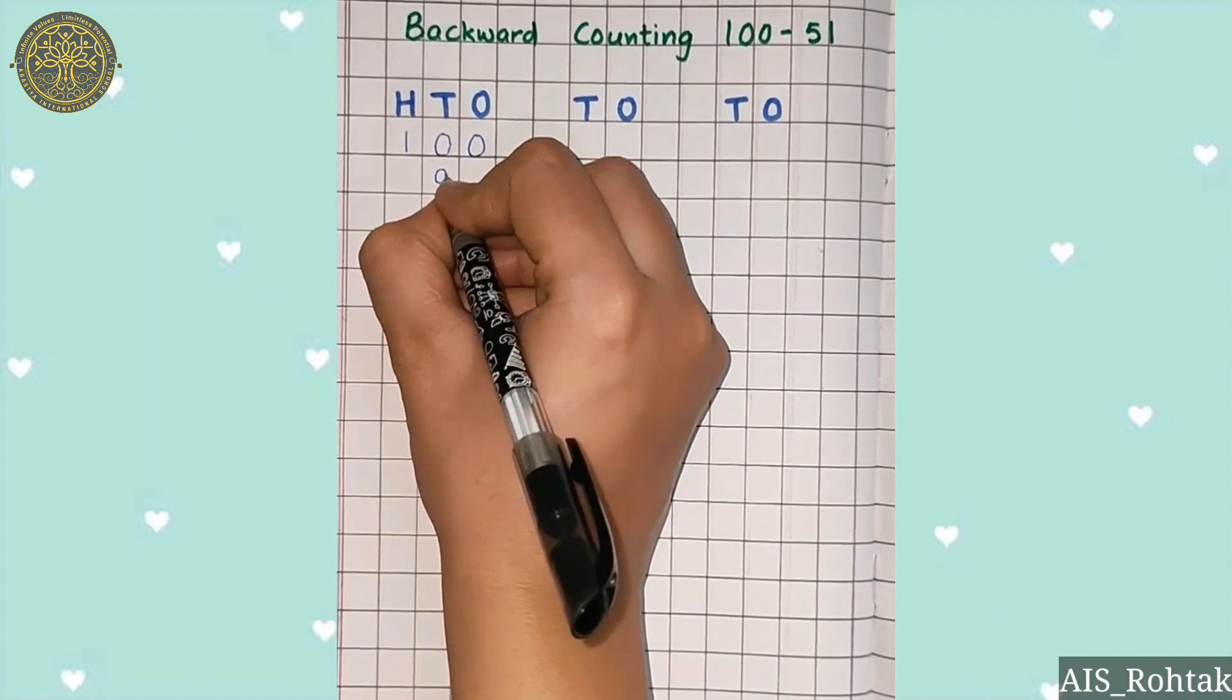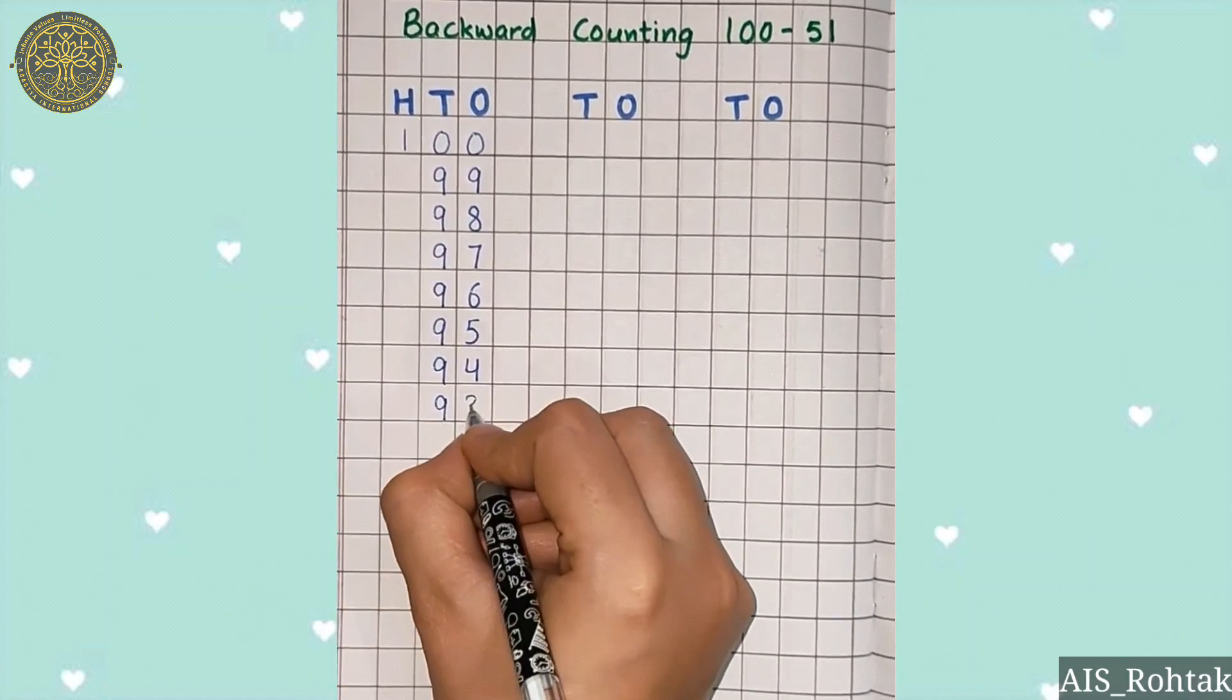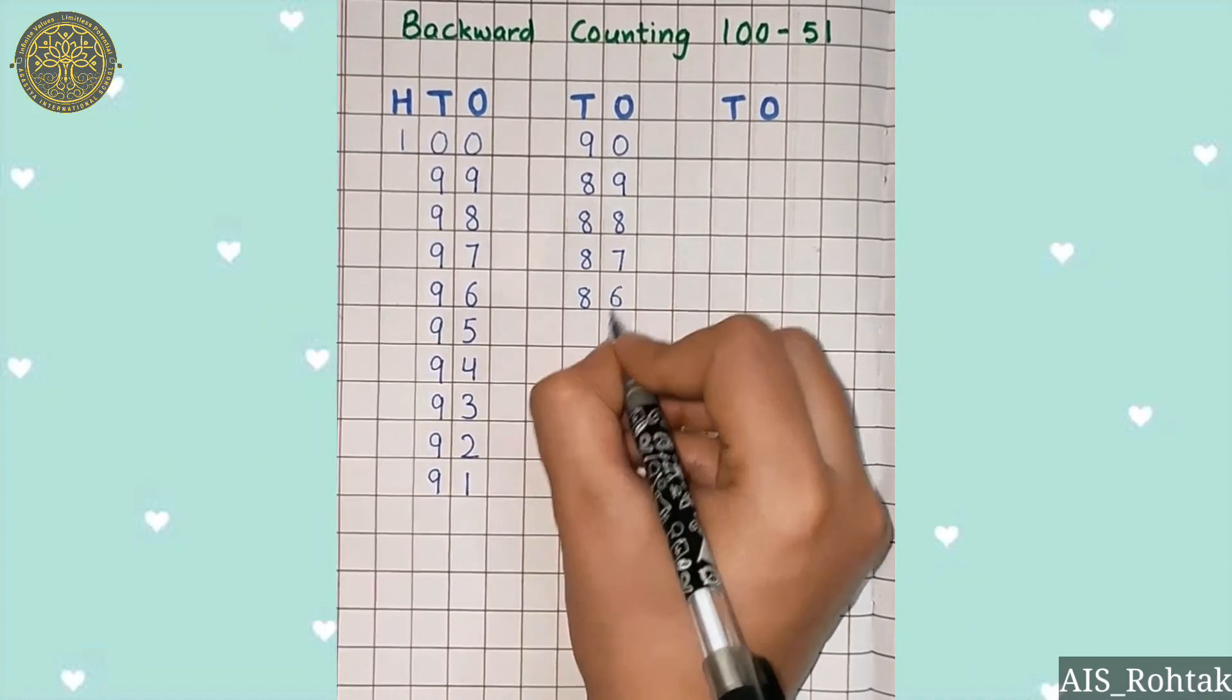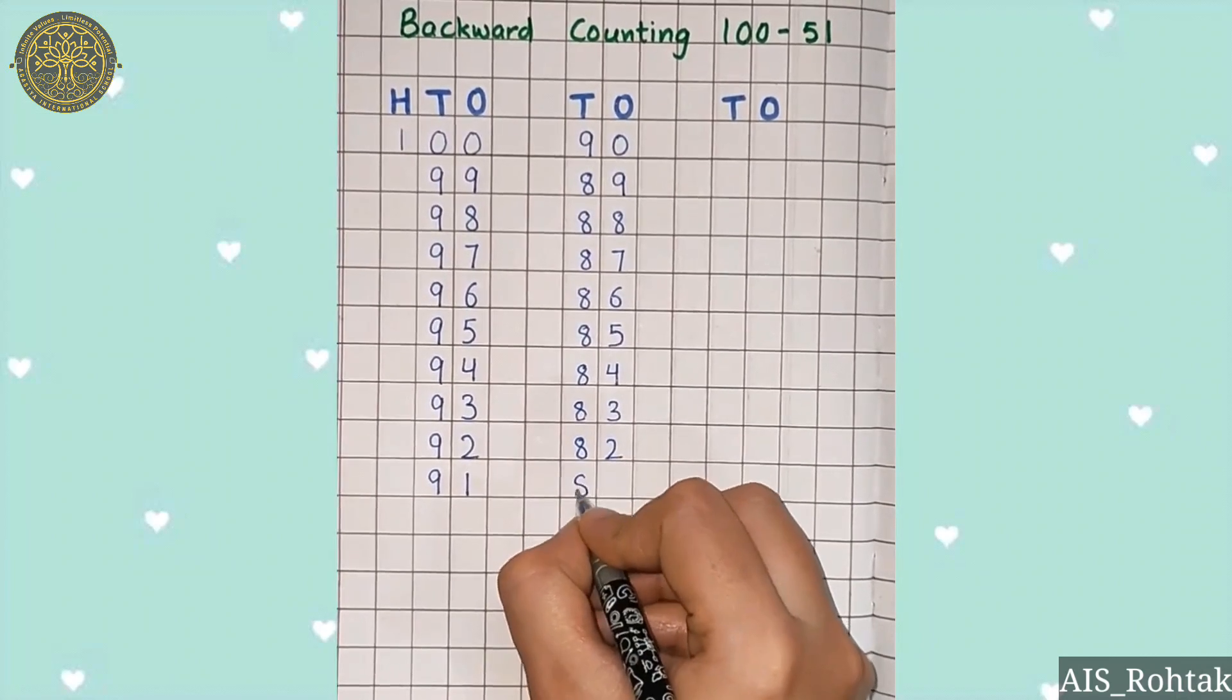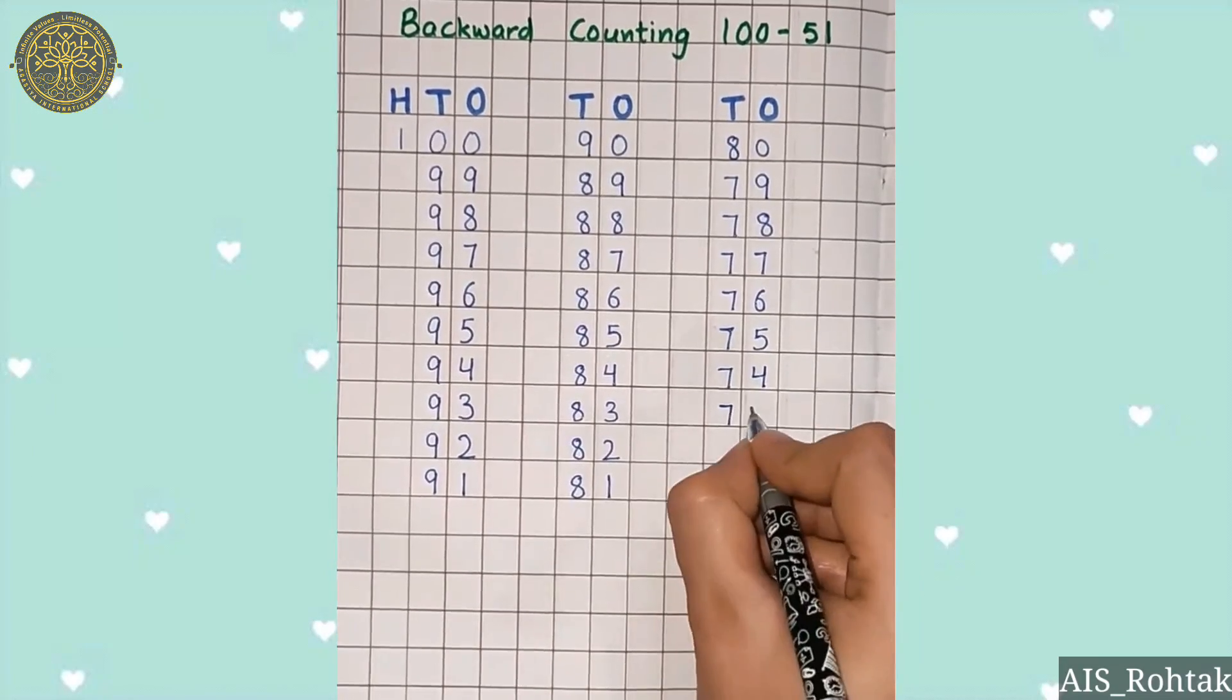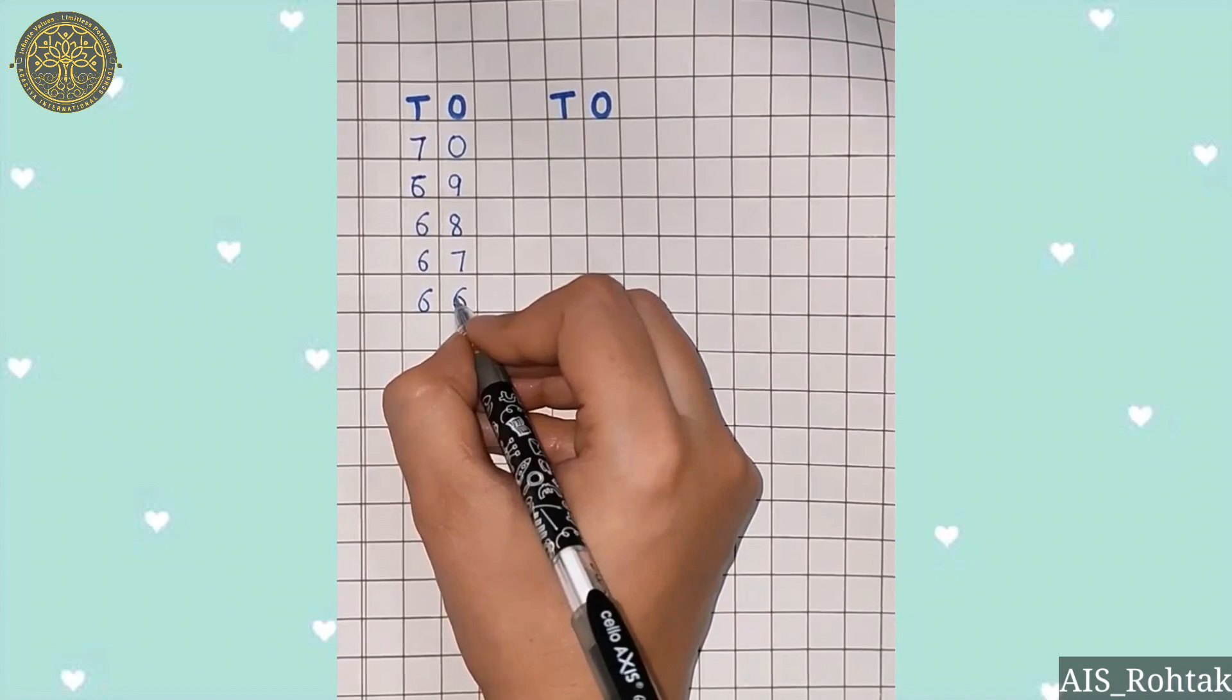100, 99, 98, 97, 96, 95, 94, 93, 92, 91, 90, 89, 88, 87, 86, 85, 84, 83, 82, 81, 80, 79, 78, 77, 76, 75.